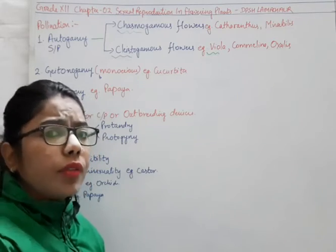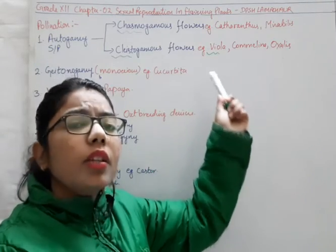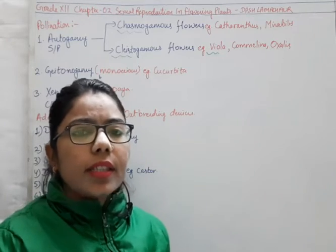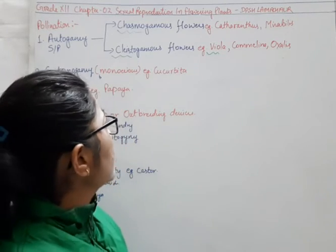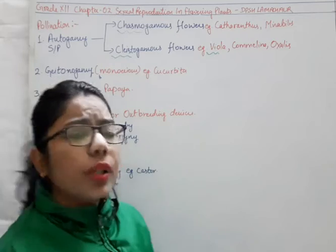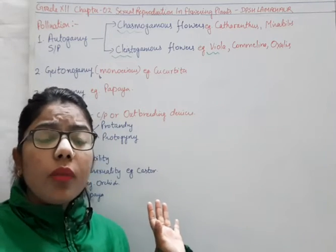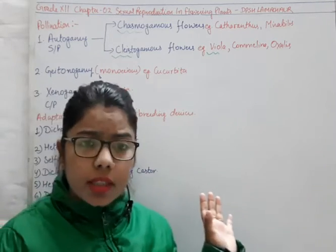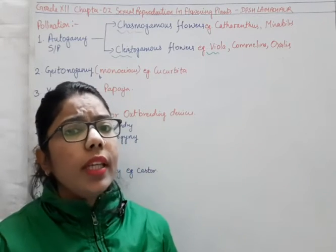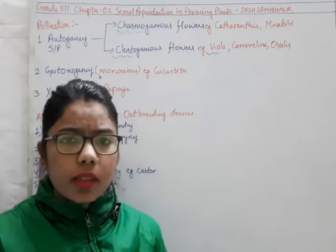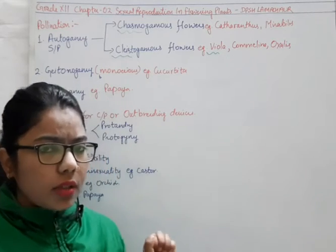Sometimes it also ensures the cleistogamous flower condition. Why? Because if there will be no seed setting by this method, another pollen can enter inside these flowers. This cleistogamy condition can be seen in most cases of wheat, where only self-pollination takes place and no cross-pollination happens. The same applies in case of grasses.